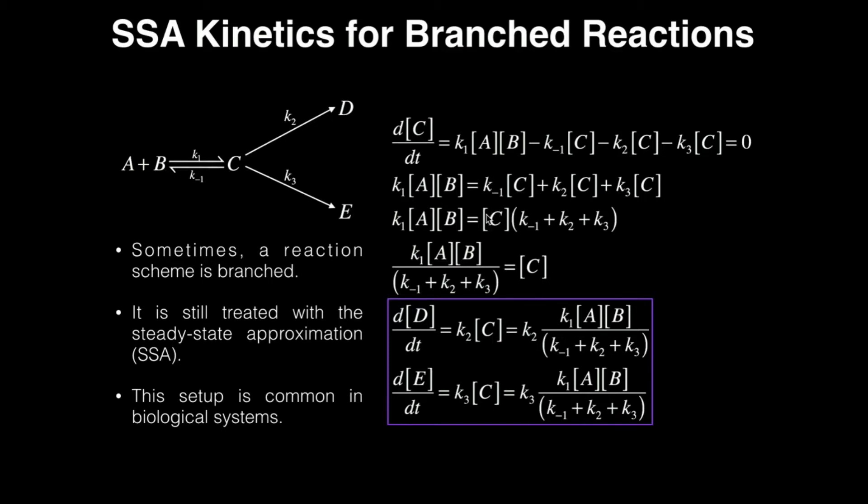Now I'm very close. I can now find the expression for the concentration of C. I'm going to divide through by the sum of these three rate constants. So my concentration of C is equal to K1 times A times B divided by this sum, K-1 plus K2 plus K3. All right? So I figured out this now.